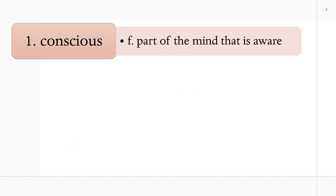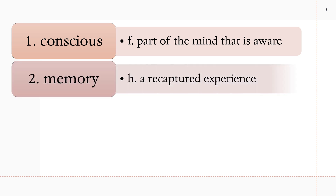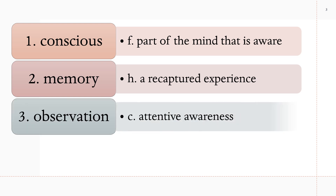Number 1: Conscious is F — part of the mind that is aware. Number 2: Memory is H — a recaptured experience. Number 3: Observation is C — Attentive Awareness.